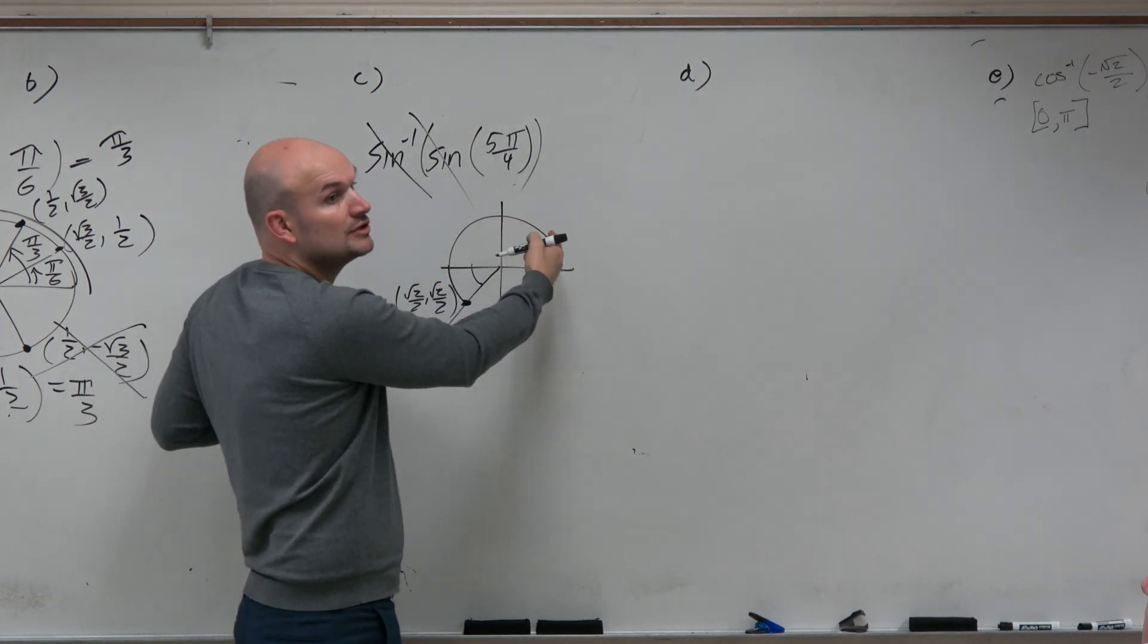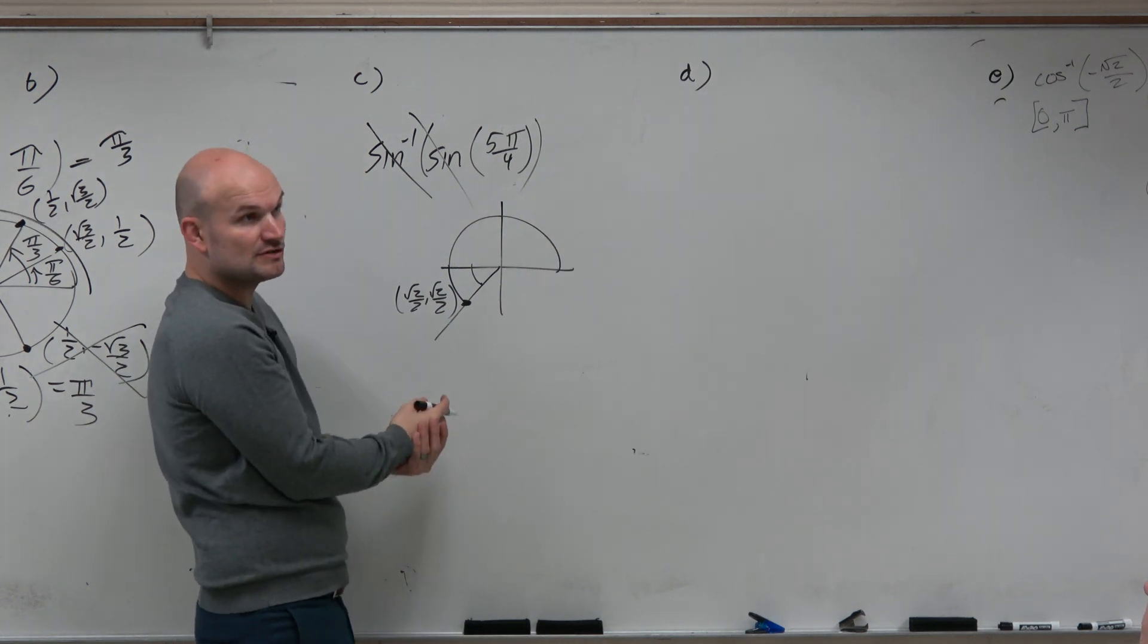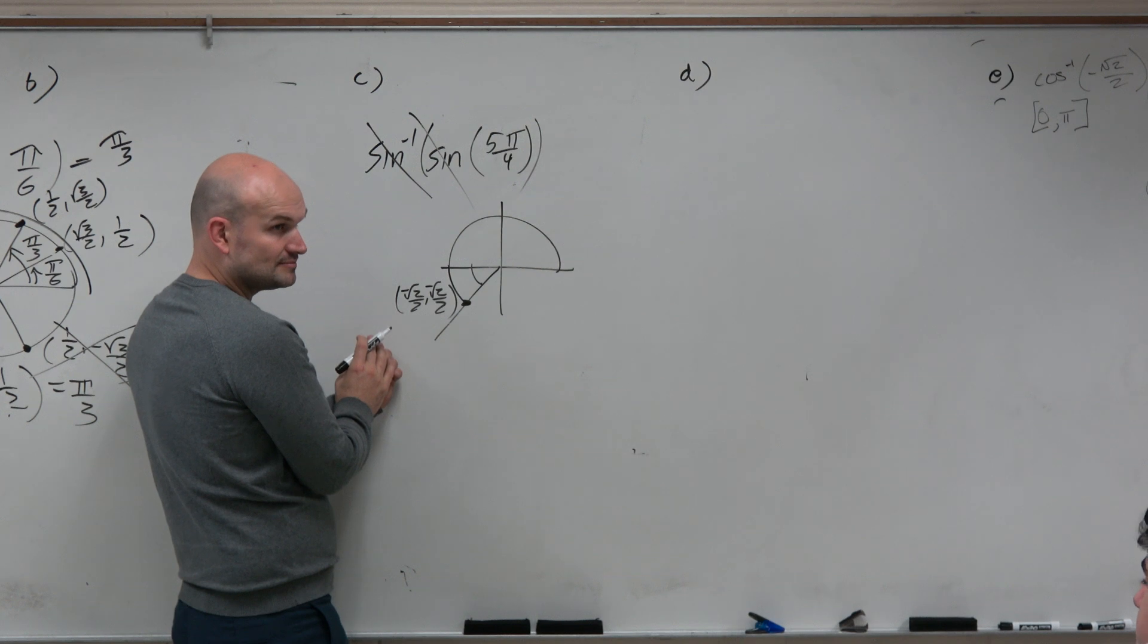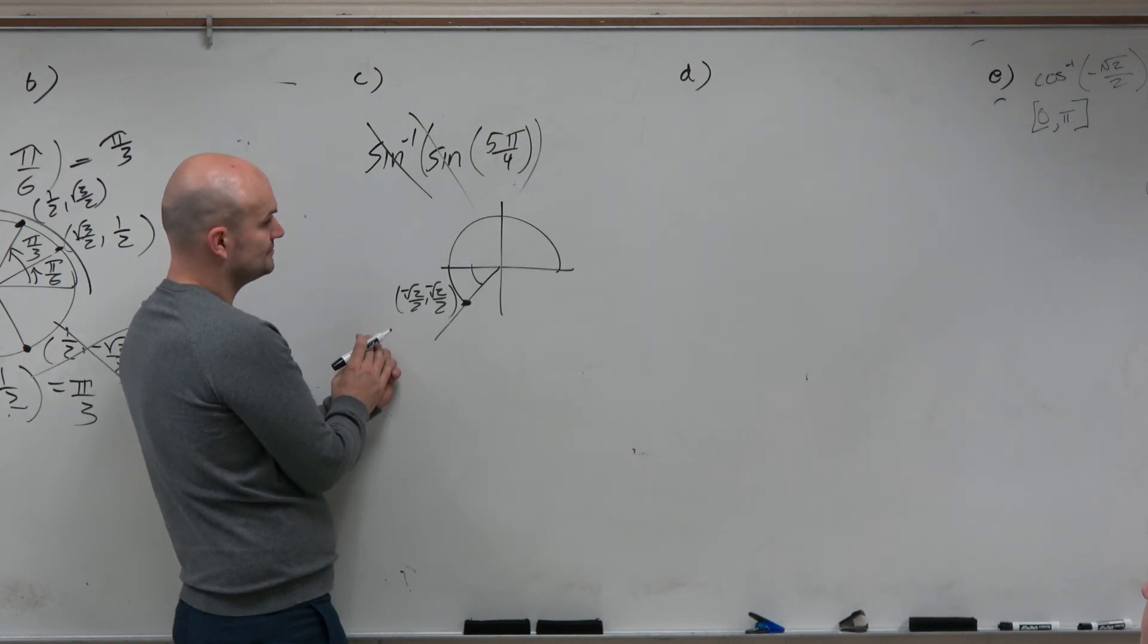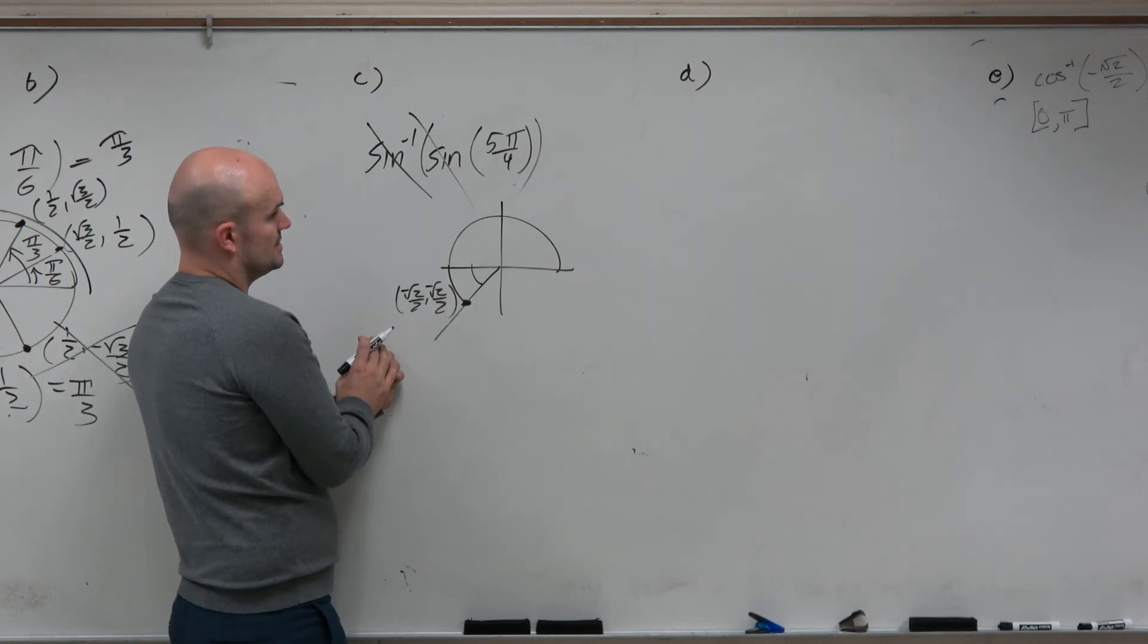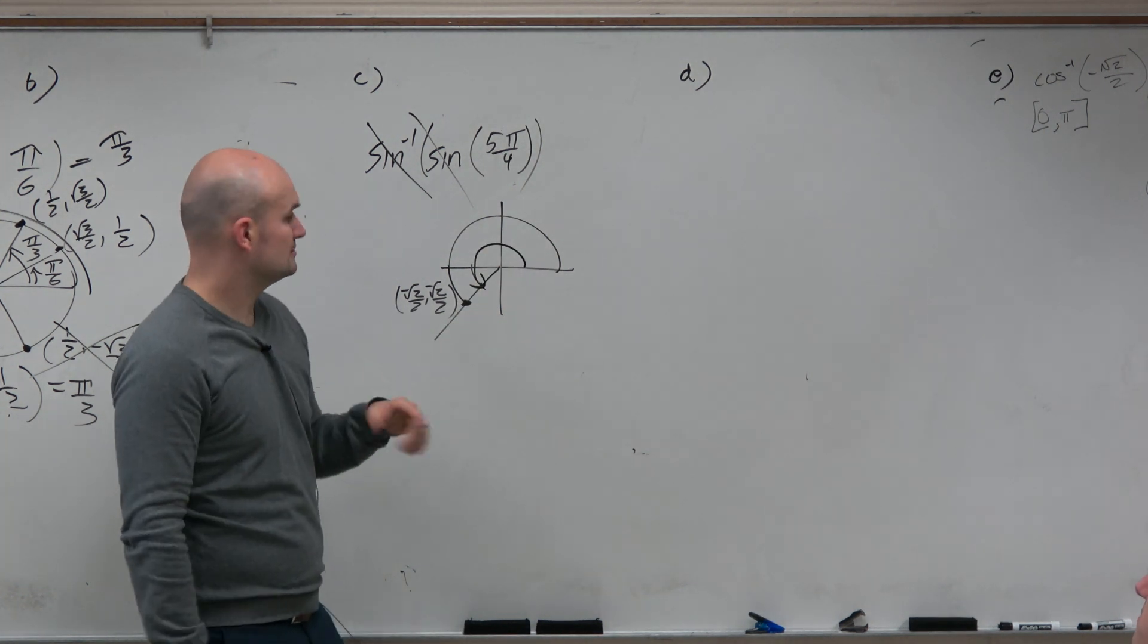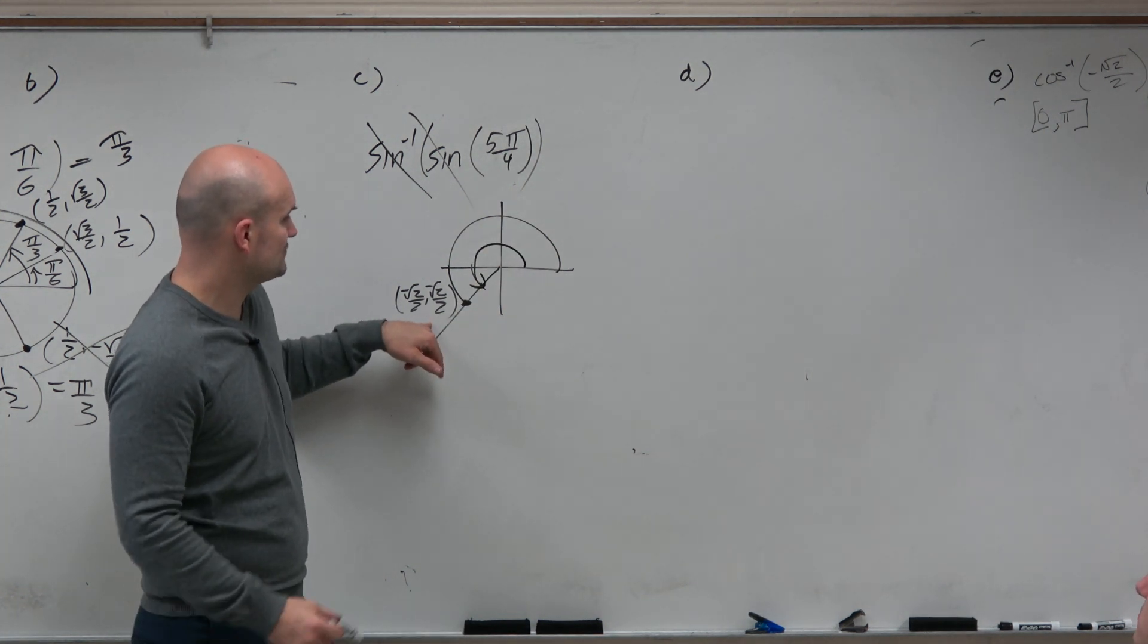So before you look at that, pi over 4, you look on your circle and say, oh, that's square root of 2 over 2. But since it's in the third quadrant, they're both negative. So there's my angle. So that becomes negative square root of 2 over 2.